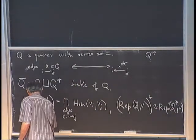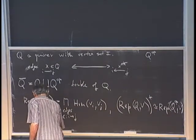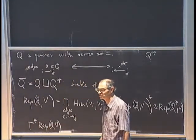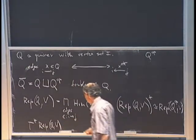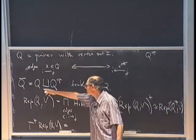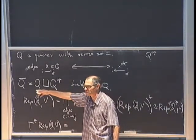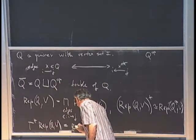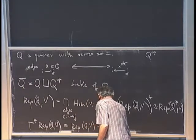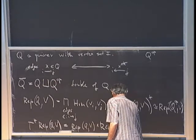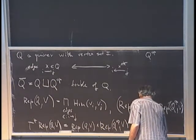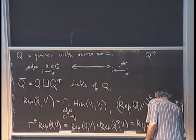Therefore, the cotangent bundle to Rep(Q,V), since Rep(Q,V) is a vector space, is simply this space times its dual. This is precisely the same as Rep(Q-bar, V). So the cotangent bundle is Rep(Q,V) times Rep(Q-opposite, V), which equals Rep(Q-bar, V).